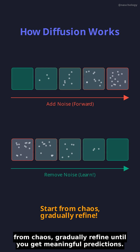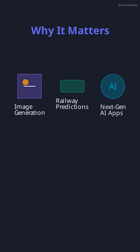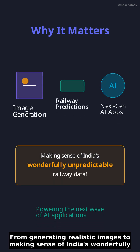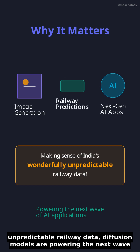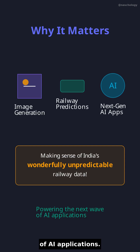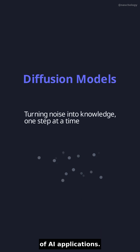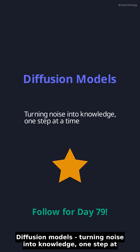Start from chaos. Gradually refine until you get a meaningful prediction. From generating realistic images to making sense of India's wonderfully unpredictable railway data, diffusion models are powering the next wave of AI applications — turning noise into knowledge, one step at a time.